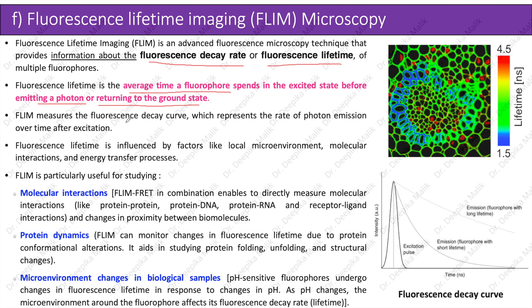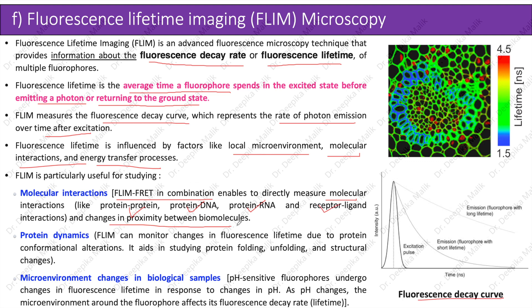FLIM measures the fluorescence decay curve, which represents the rate of photon emission over time after excitation. Fluorescence lifetime is influenced by factors like local microenvironment, molecular interactions, and energy transfer processes. FLIM is particularly useful for studying molecular interactions; combined with FRET, FLIM-FRET enables direct measurement of molecular interactions like protein-protein, protein-DNA, protein-RNA, and receptor-ligand interactions, as well as changes in proximity between biomolecules.